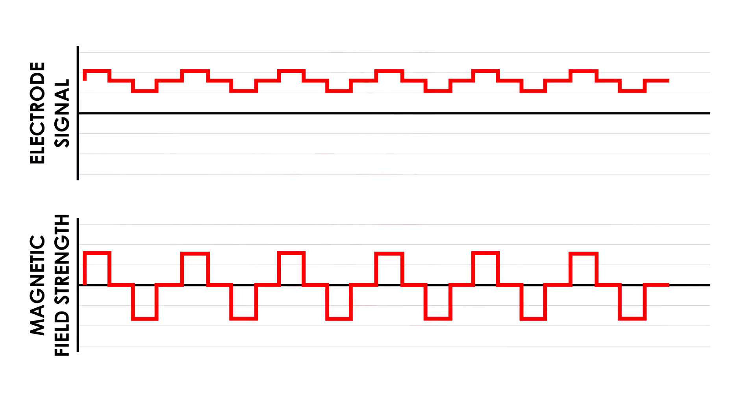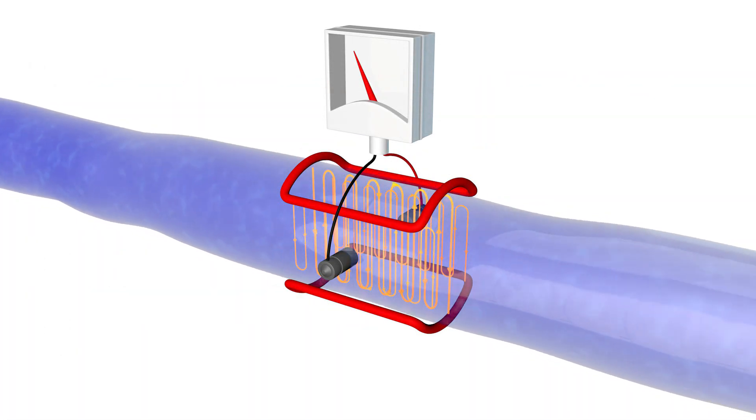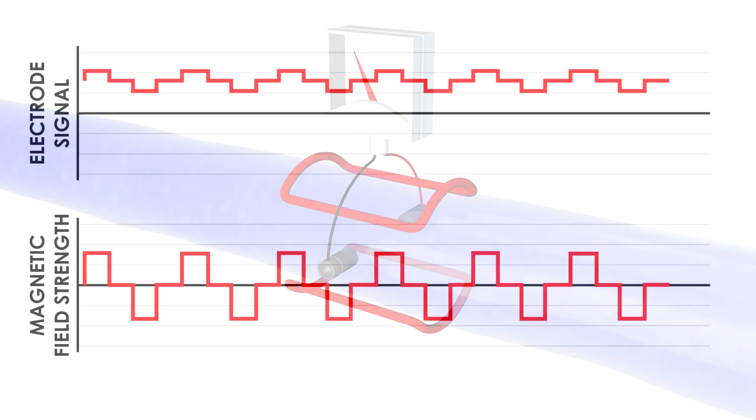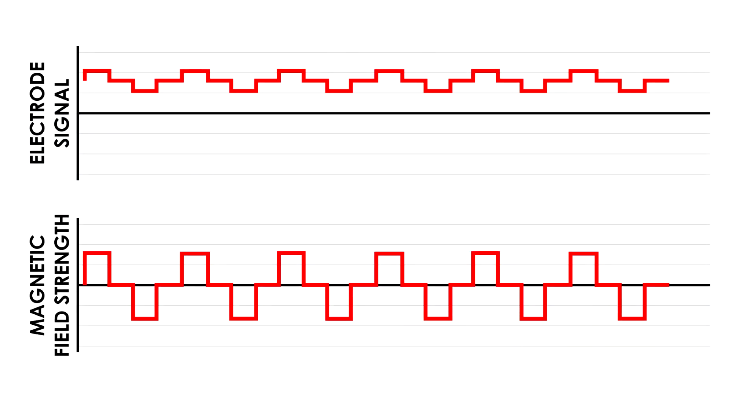Remember, we only care about the portion of the EMF generated by the magnetic field, since this is the only part of the signal which is proportional to the velocity of the fluid. Everything else is just noise. Notice that even when there is no magnetic field, there may still be a non-zero voltage between the electrodes.